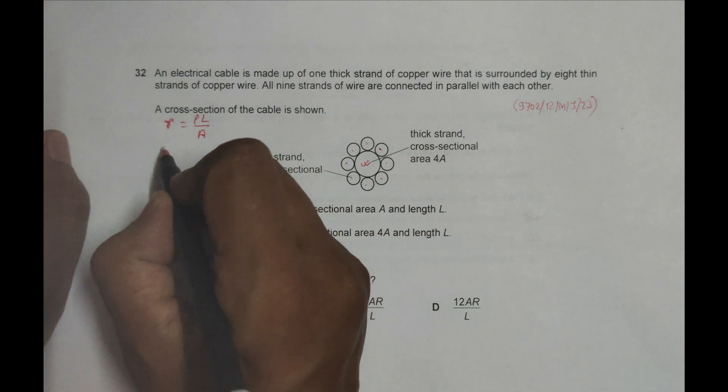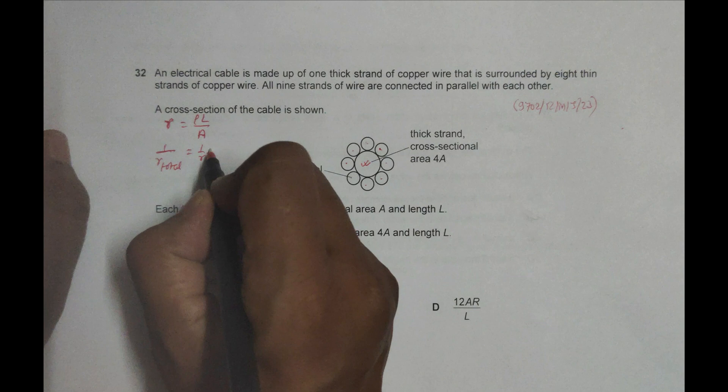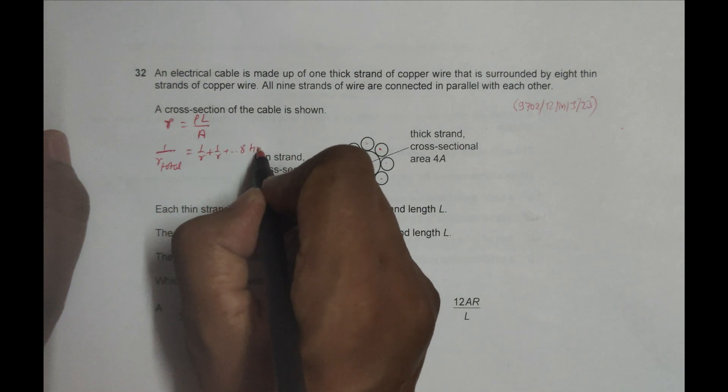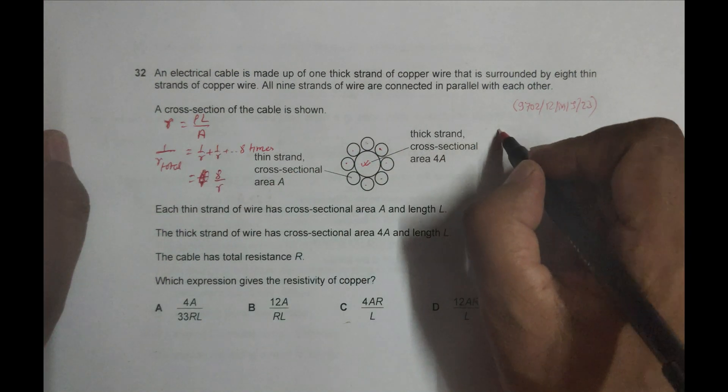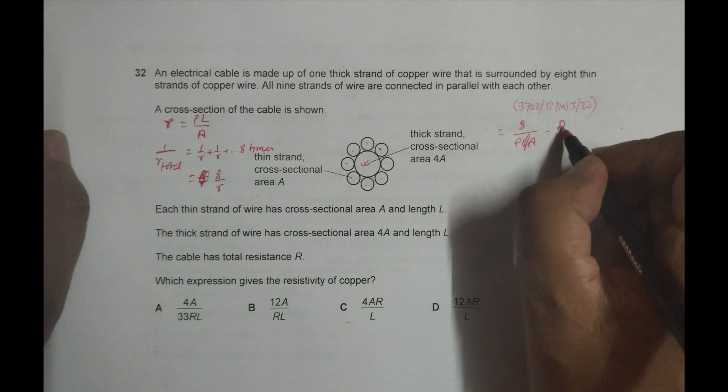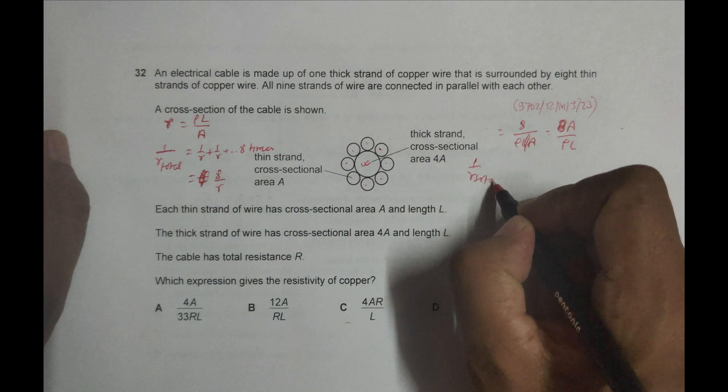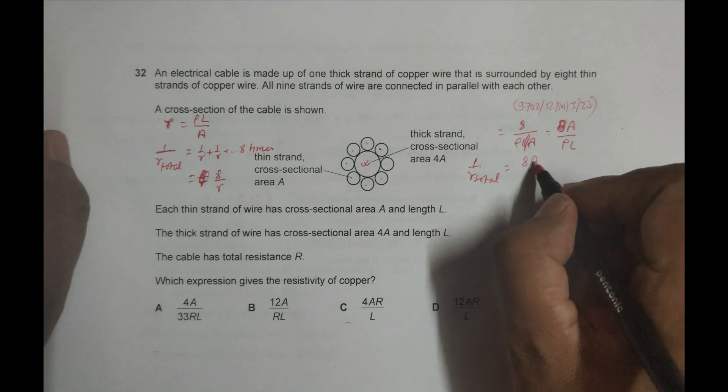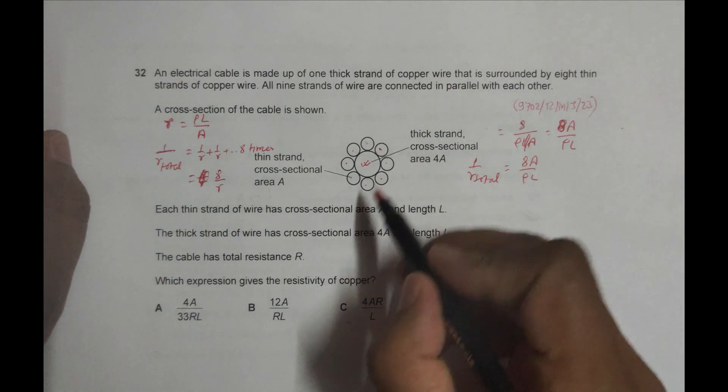Now we have eight such thin strands of wire, so their resistance would be like this: 1/R_total equals 1/R plus 1/R eight times, which equals 8/R. This equals 8/(ρL/A), which equals 8A/(ρL). So 1/R_total equals 8A/(ρL). This is only for the thin strands of wires.